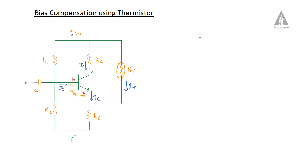Hi, in this lecture we are going to discuss about bias compensation using thermistor. A thermistor is actually a type of resistor, but the resistance value varies with temperature. That is why the name thermistor — thermal plus resistor equals thermistor.